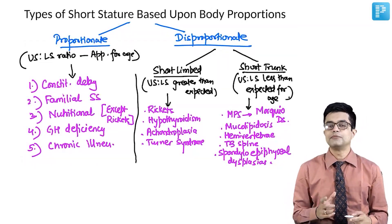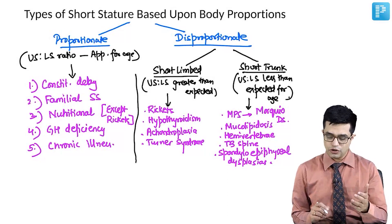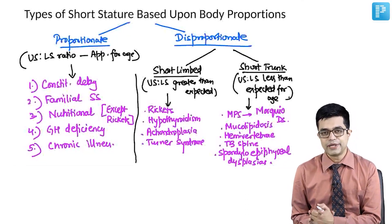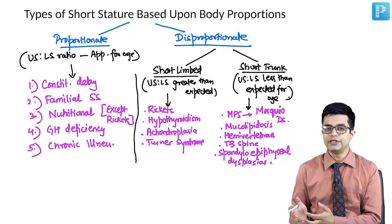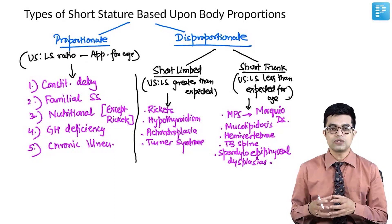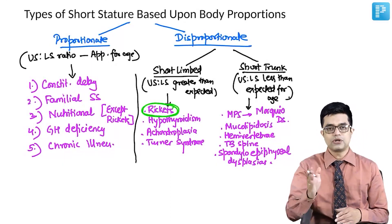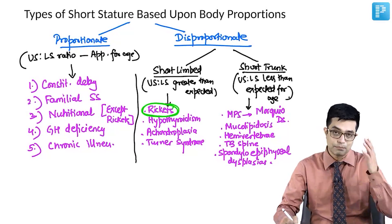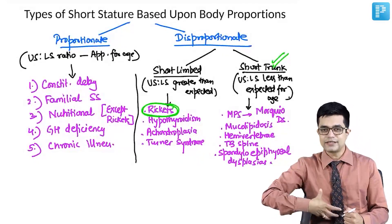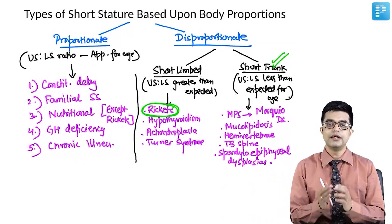There is an interesting discrepancy in the textbooks. OP Ghai states that rickets causes short-limbed short stature. However, other textbooks including the textbook of pediatrics by Dr. Suraj Guptey, two nutritional texts, and one review article state that rickets can also produce short-trunk short stature. So remember: if you have to choose one answer, rickets causes short-limbed short stature, but in some patients it can also cause short-trunk short stature, depending on whether the central axis or peripheral limbs are more involved.